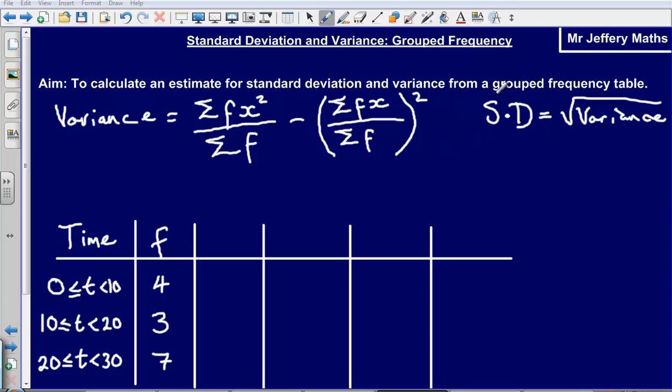So the important thing here is that we recognize that we're looking at grouped frequency tables. This means that our data has been put into class intervals. So we can see our class intervals here: 0 to 10, 10 to 20, 20 to 30, and so on.